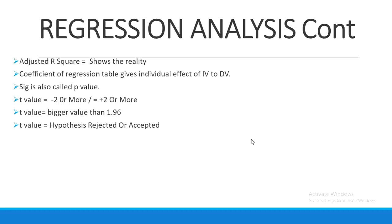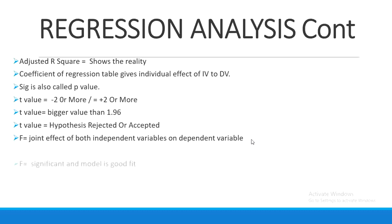If your t-value is more than two, your hypothesis will be accepted — provided your hypothesis states a positive relationship. The F-value tells the joint effect of all independent variables on your dependent variable. If you have three or four variables, it will show their combined effect on the dependent variable. F-value also tells you the significance of your model and whether it is a good fit.